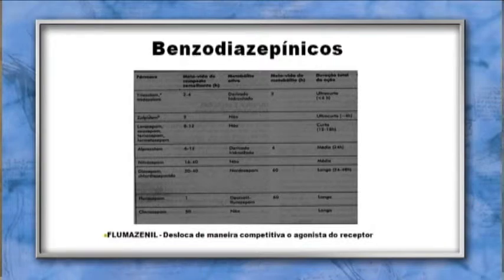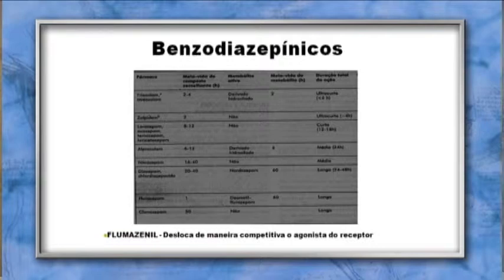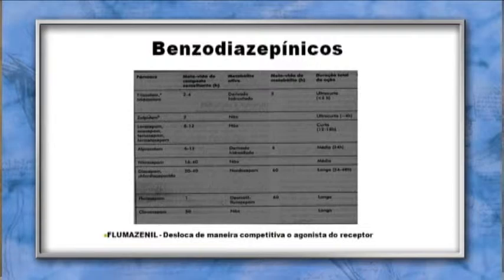De ação ultracurta: triazolam e midazolam (meia-vida em torno de 6 horas); e o zolpidem, que age de forma semelhante ao benzodiazepínico com duração de apenas 4 horas. De ação curta: lorazepam, oxazepam e temazepam (duração de 12 a 18 horas). De ação média: alprazolam e nitrazepam (duração de 24 horas). De ação longa: diazepam, flurazepam e clordiazepóxido (pode durar até 48 horas). O flumazenil desloca de maneira competitiva o agonista benzodiazepínico do receptor GABA.